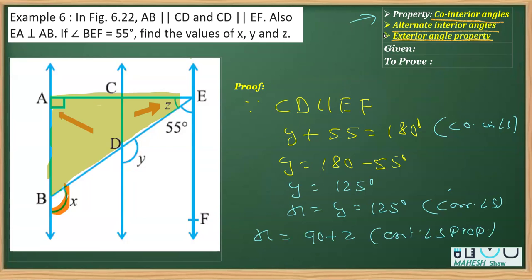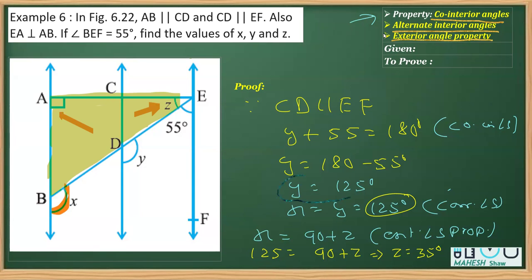We can replace x with its value of 125 degrees, so 125 equals 90 plus z. Transposing, z equals 125 minus 90, which gives z as 35 degrees. So the three values we calculated are: y = 125 degrees, x = 125 degrees, and z = 35 degrees.